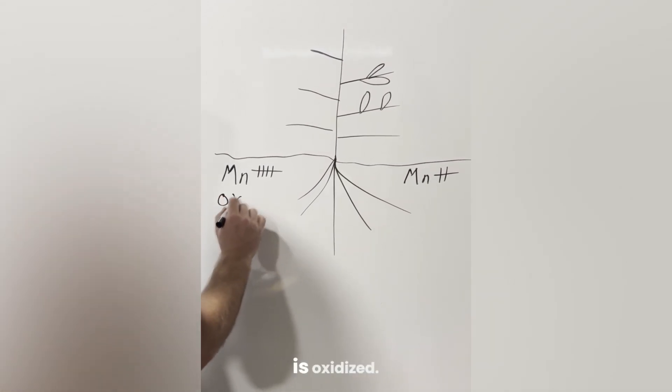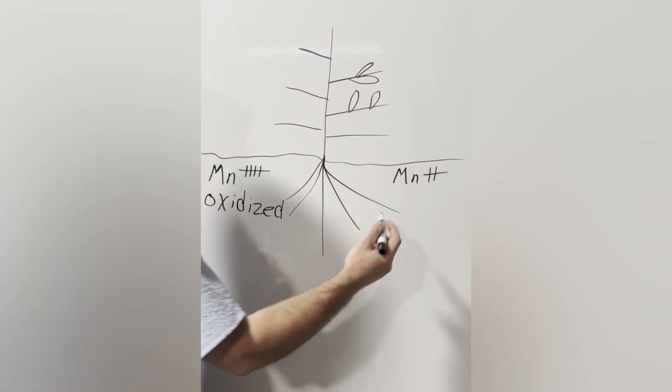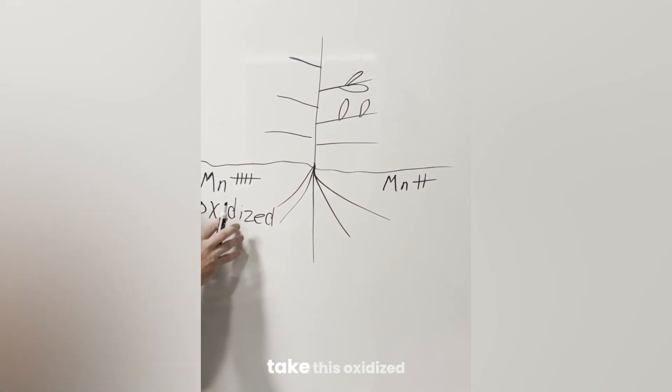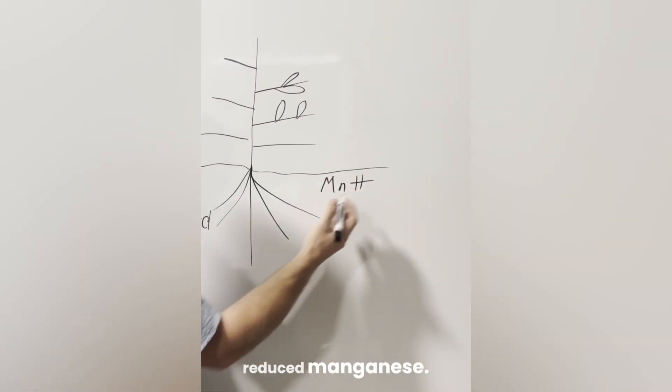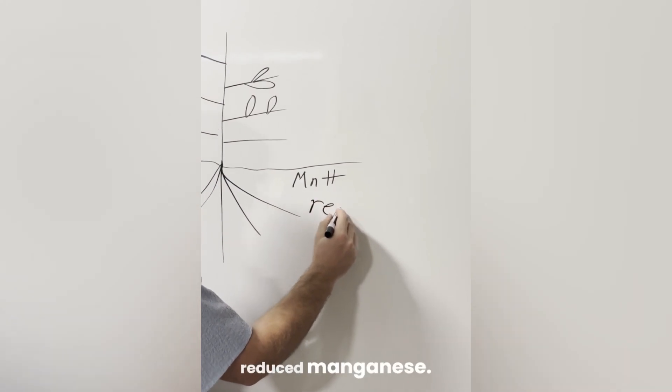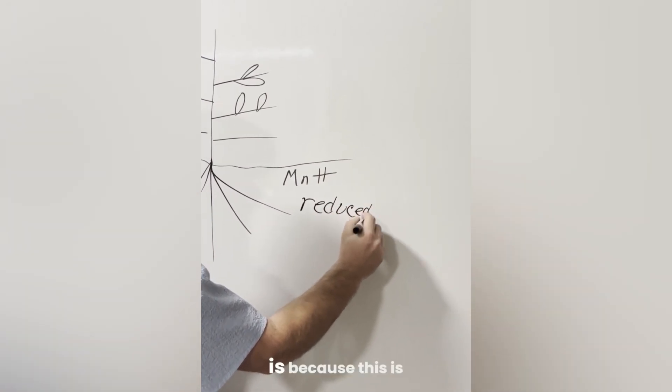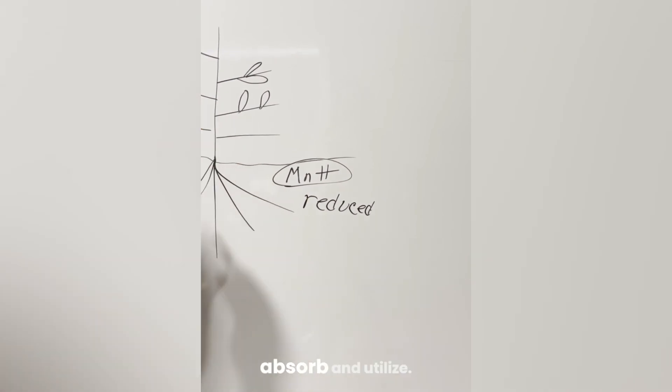So this is oxidized. And then it is a function of soil biology to take this oxidized manganese and convert it to reduced manganese. You remove one or two electrons, and now you have reduced manganese. The reason this matters is because this is the form of manganese that plants can actually absorb and utilize.